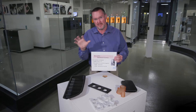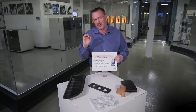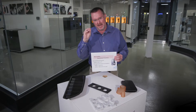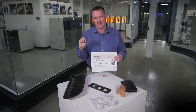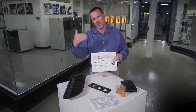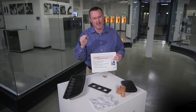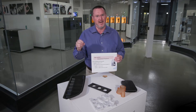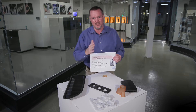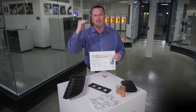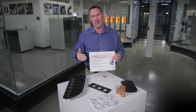One area where we see a lot of variation across the additive industry is the speeds at which people pull their tensile bars. The ASTM requirement calls for five millimeters per minute, and if the part does not fail, you go to 50 millimeters per minute — that is the full rate. At 3D Systems that's absolutely what we use. Be sure your ASTM standards are not at 10 millimeters per minute. When you compare data, understand the speed, because your elongation at break can really move depending on that speed.